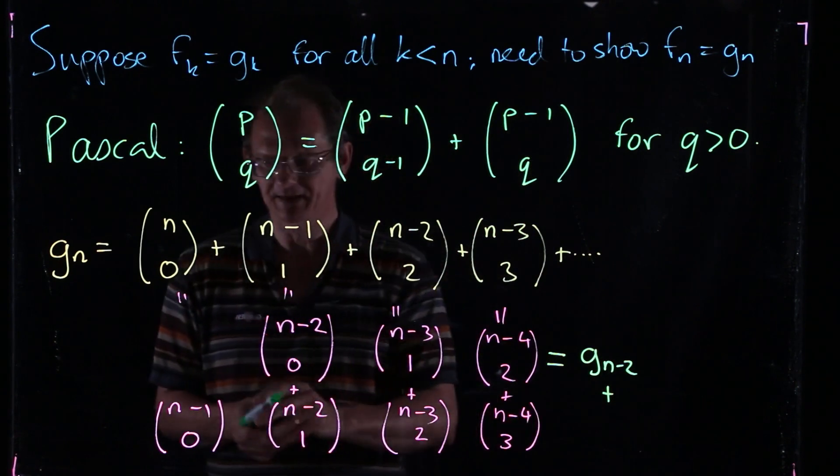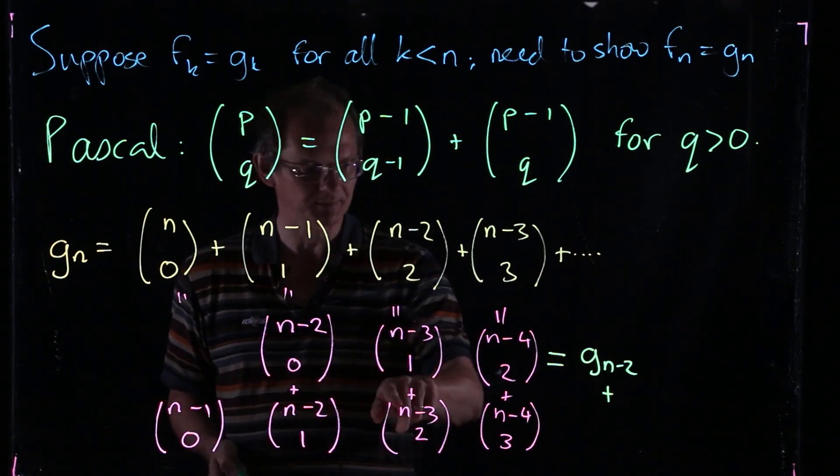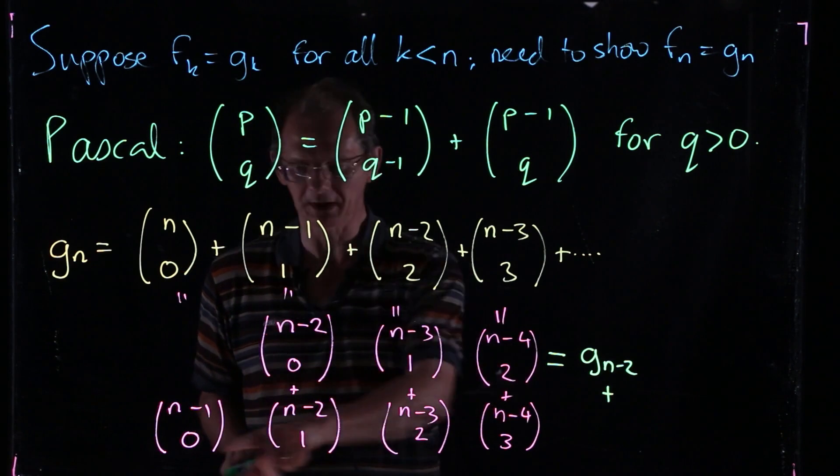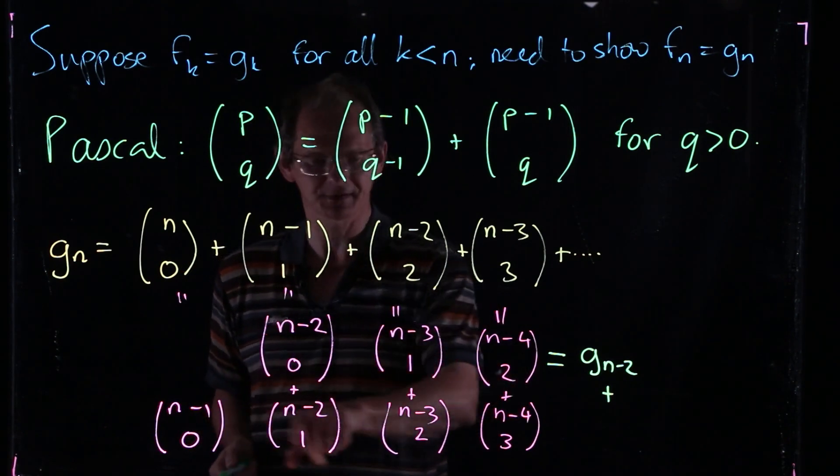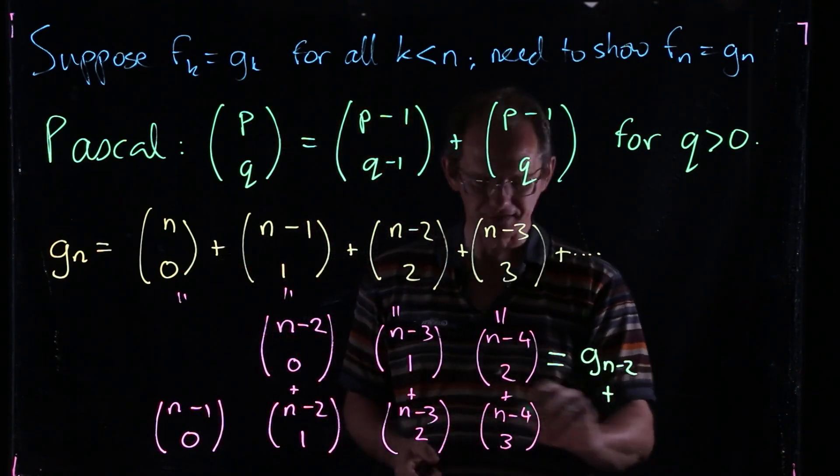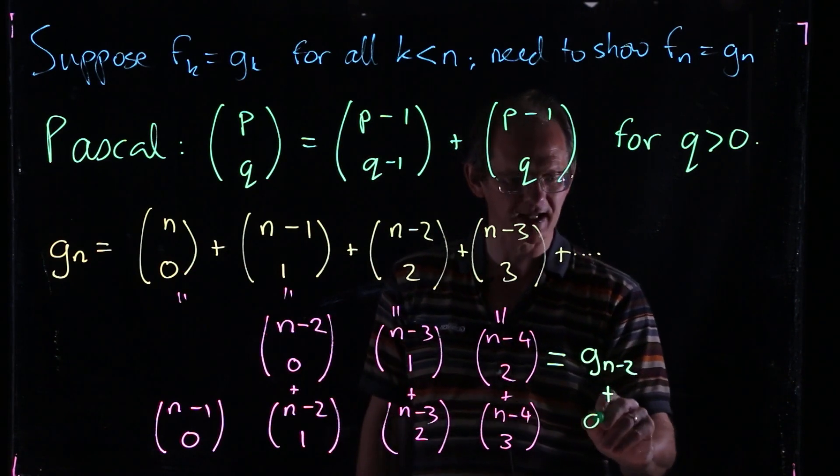And then what about this stuff here? We've got n-1 choose 0, then n-2, n-3, n-4 all decreasing by 1. Up by 1 on the bottom: 0, 1, 2, 3. So this is just the definition of Gn-1.